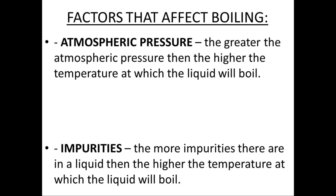Since the water boils at a temperature less than 100 degrees Celsius, it wouldn't cook food properly. Instead of a regular pot, climbers use a pressure cooker. The pressure cooker keeps the gas sealed inside — steam is trapped so pressure builds up, allowing a higher boiling point, and that way the food cooks properly.